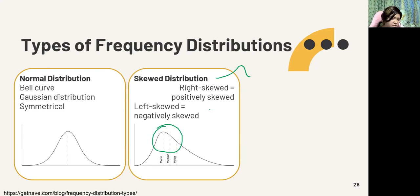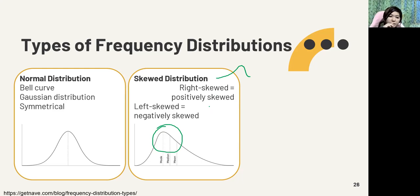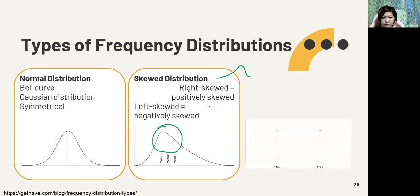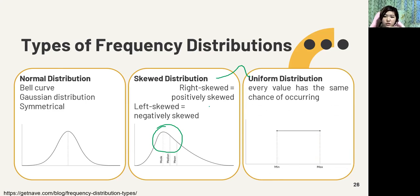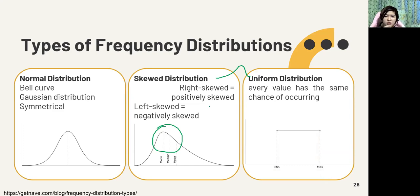Teachers actually analyze exam results using these distributions — to easily determine how many students scored low, how many scored high, and so on. We also have the uniform distribution, where the curve is flat — everyone scored the same or scores are evenly distributed. These are the different types of frequency distributions.